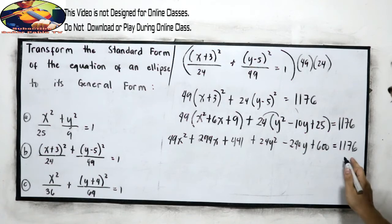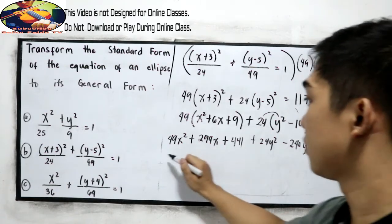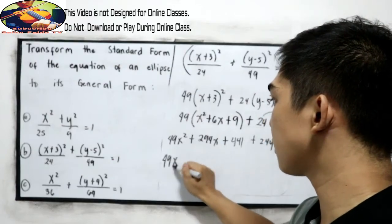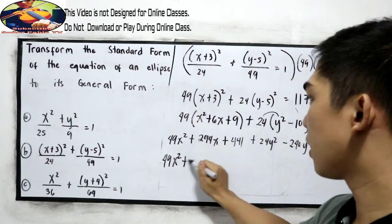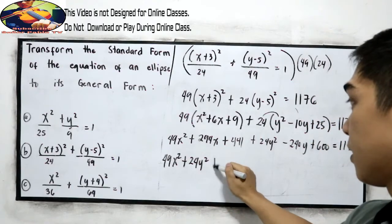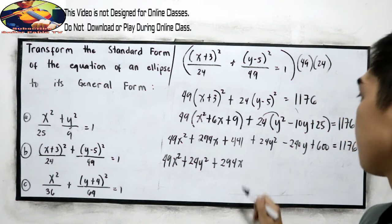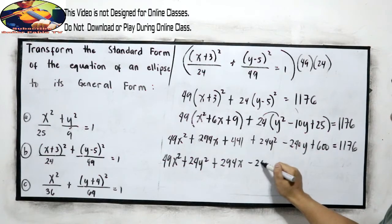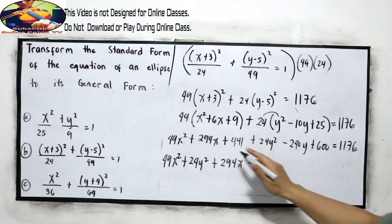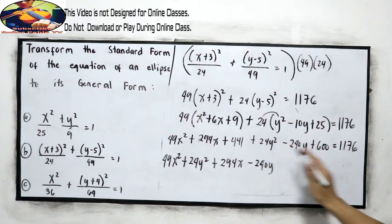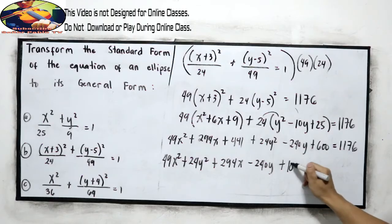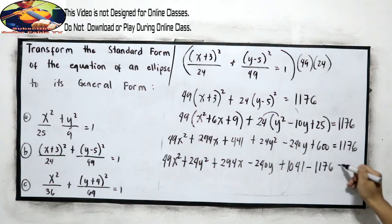Next, of course we need to equate to 0. So 49x squared, let us arrange, plus 24y squared, plus 294x, minus 240y. Combine like terms, 441 plus 600, that is 1,041. Addition property of equality, minus 1176, is equal to 0.